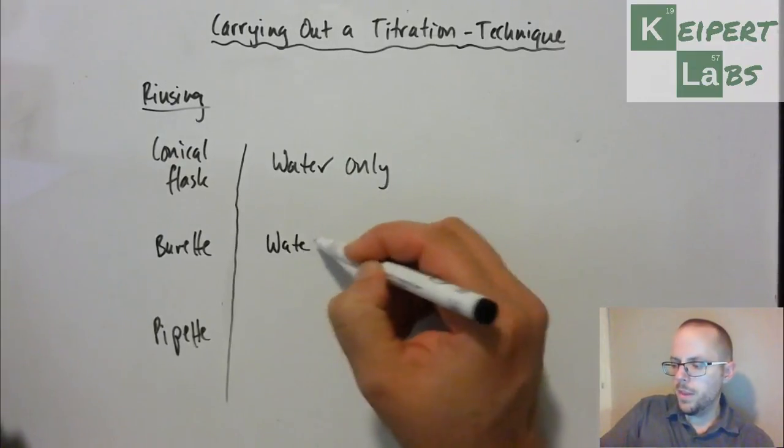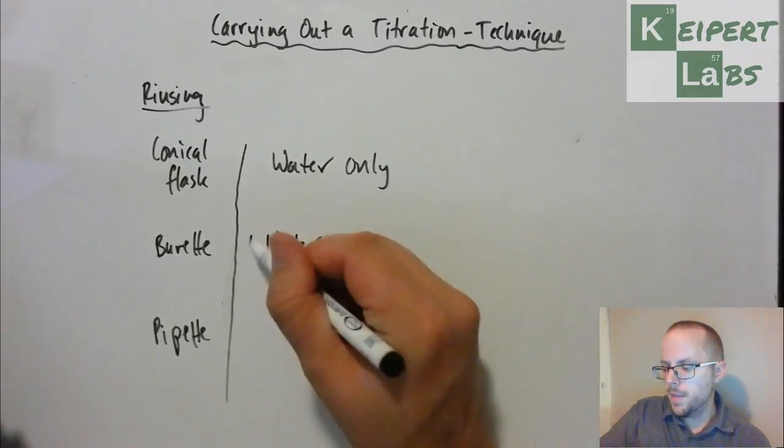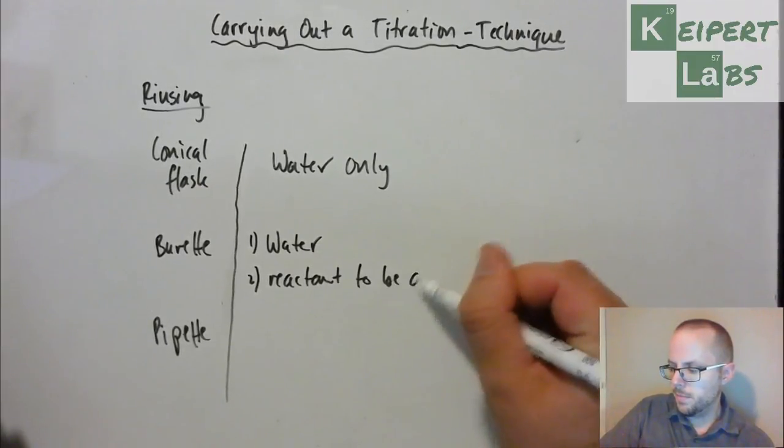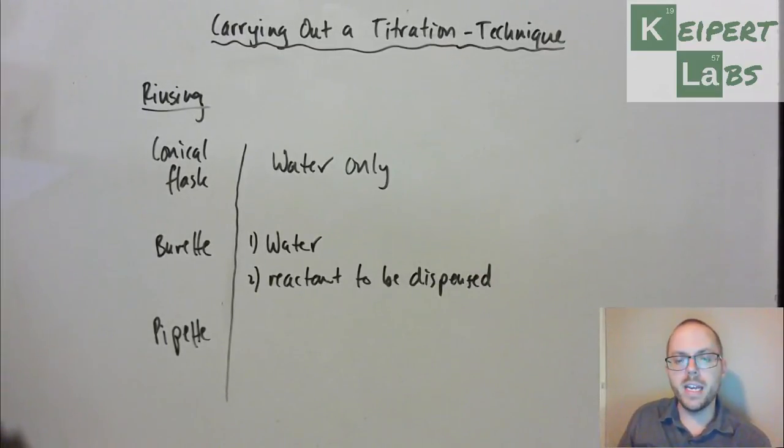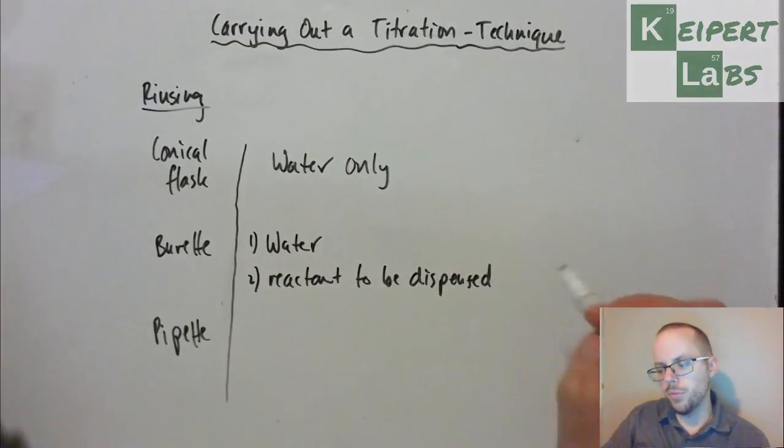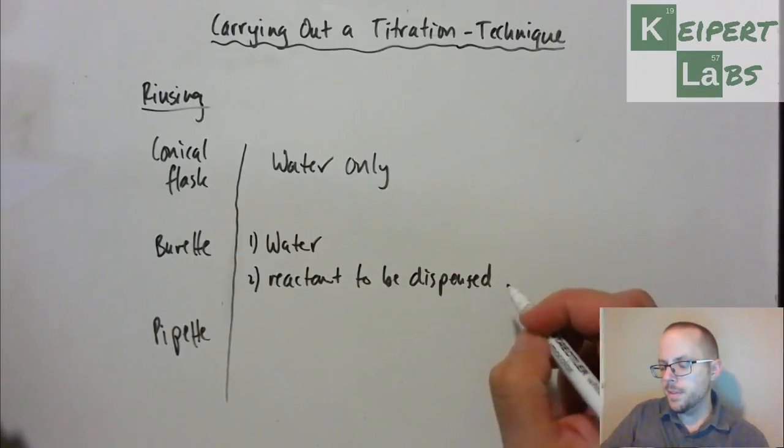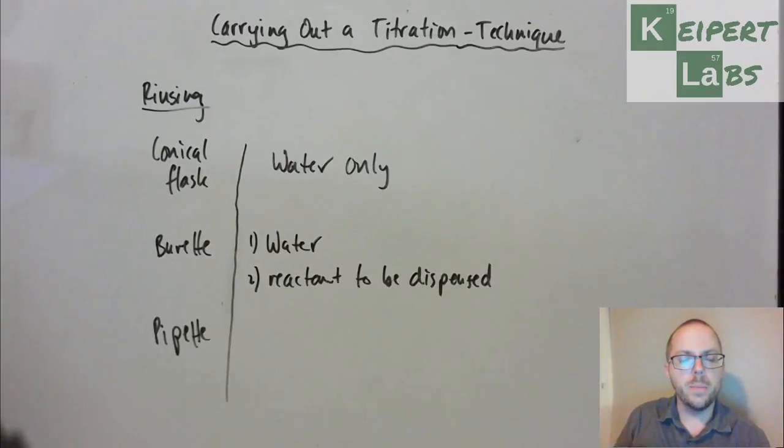So then, with a burette and then also with a pipette, we first rinse with water and then we second rinse with the reactant to be dispensed. So we get a small amount of water and we rinse our burette to rinse away any contaminants, and then we get a small amount of our reactant to be dispensed. We rinse our burette with it and then chuck it out. What happens is that it basically coats the inside of our burette with a thin layer of that reactant that's going to be added, so that we don't have any leftover water that's going to dilute the substance that we put in there.